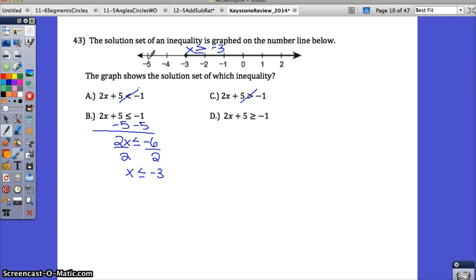Well, these numbers, negative 5 is less than and negative 5 is not a solution. So it has to be d. Let's check it. Minus 5 from both sides. I have 2x is greater than or equal to negative 6. Divide by 2. x is greater than or equal to negative 3. d is correct.